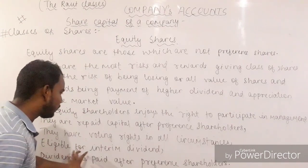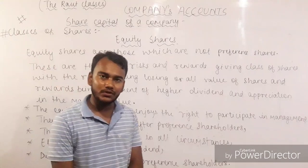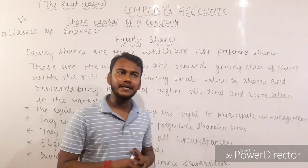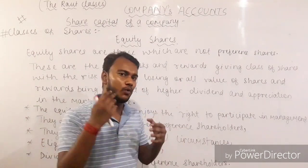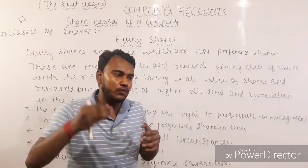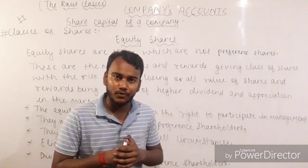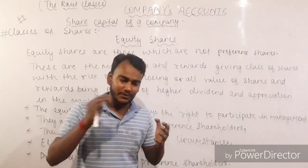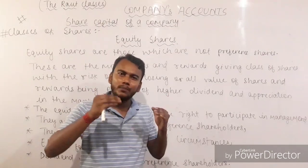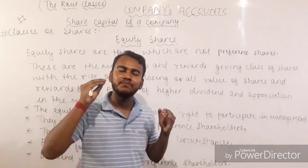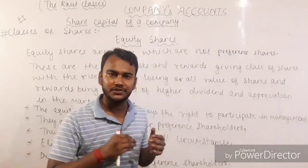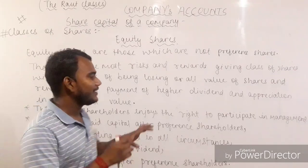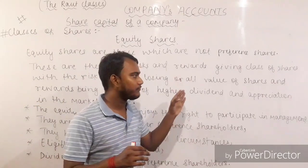Equity shareholders are eligible for interim dividend payment. When a company earns more profit than anticipated, the company can announce an interim dividend during the year — some additional percentage of profit can be given as dividend to equity shareholders. But this right of receiving interim dividend is lacking in the case of preference shareholders.